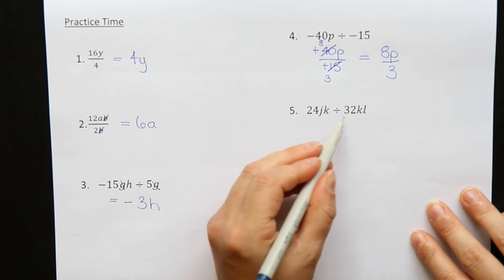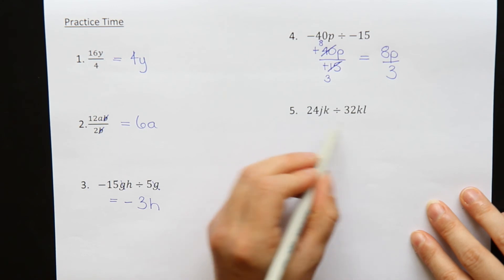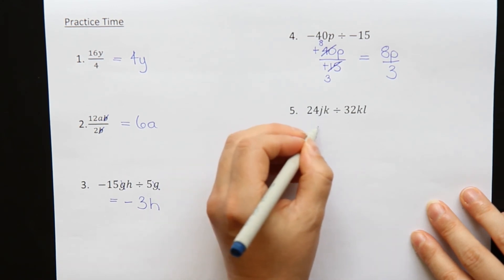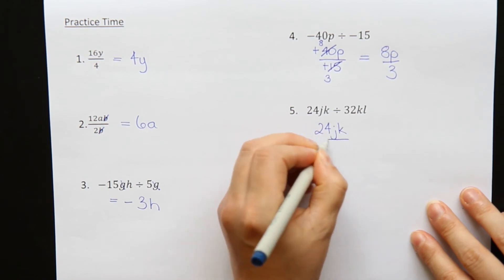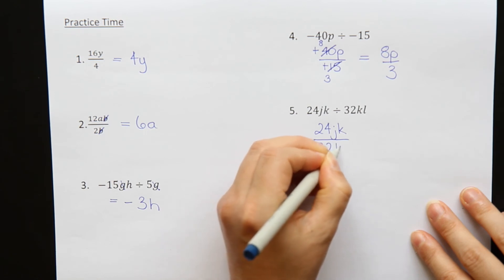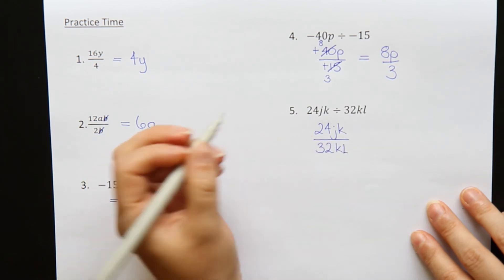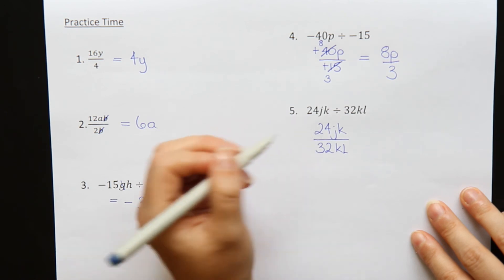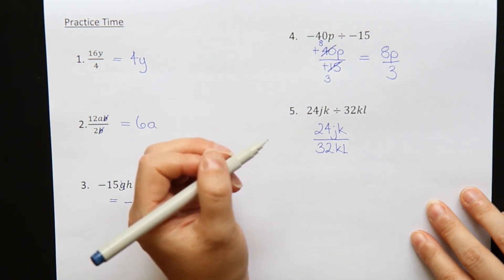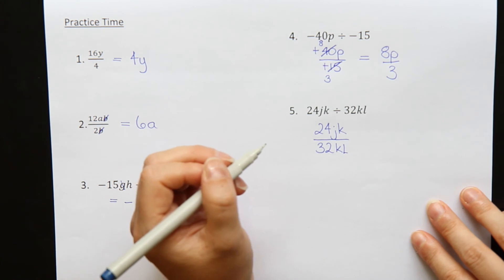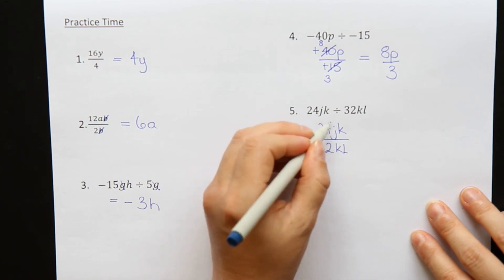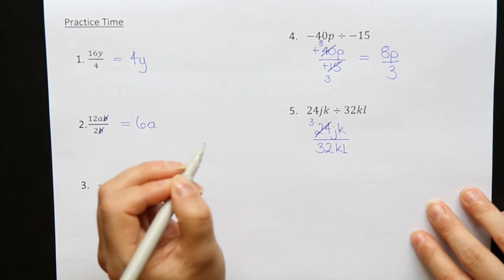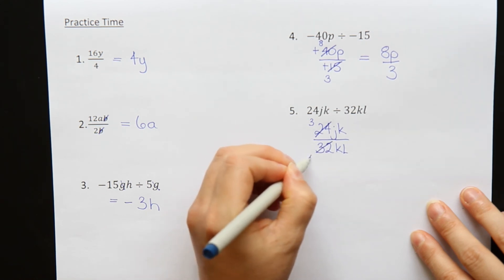One more question. 24jk divided by 32kl. Well, that's not going to divide very nicely. So we write it as a fraction. 24jk over 32kl. 24 and 32 I can divide by 8. Would be the biggest number. You could also divide by 4 or by 2. But it's best to go to the biggest number. And that way you are simplifying as much as possible. So 24 divided by 8 goes 3 times.